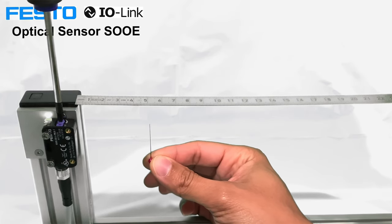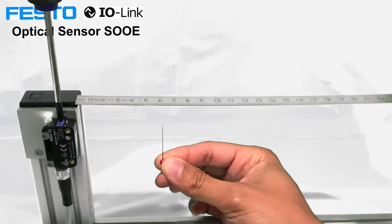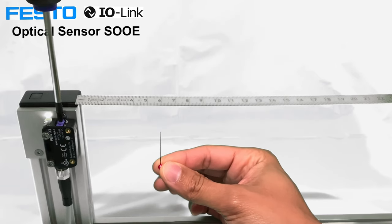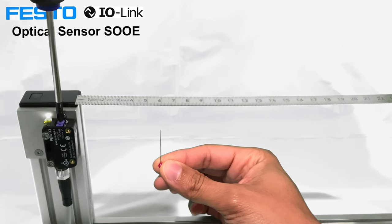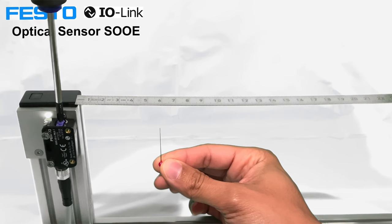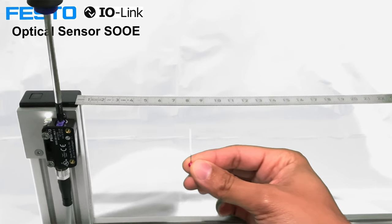...needle. The light is shining on the needle right now. Adjusting this a bit more, about an eighth of a turn, and now it detects at six centimeters.